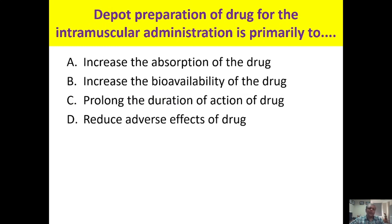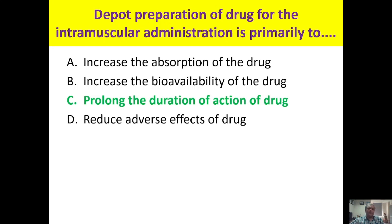Which depot preparation for intramuscular administration is primarily used for? In intramuscular depot preparations, the drug is administered and slowly releases into capillaries and systemic circulation. The primary purpose is to prolong the duration of action of the drug. It is not meant to increase absorption, bioavailability, or reduce adverse effects. The answer is C — prolong the duration of action.